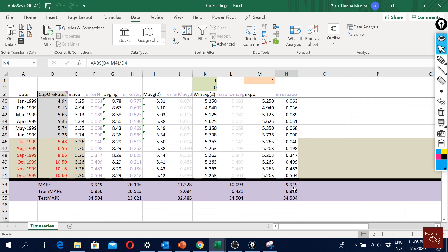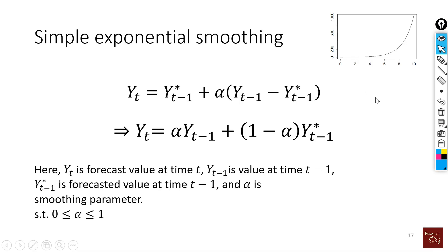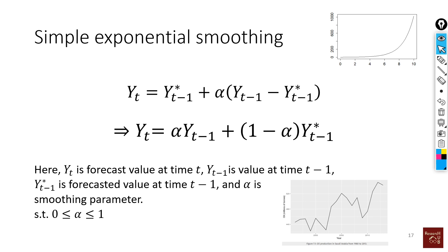So far, naive forecast performs best for this data. Simple exponential smoothing should be used when there's no clear trend or pattern in the data — no increasing/decreasing trend and no seasonality effects. When we don't have those components, simple exponential smoothing is appropriate. In the next video, we'll move on to Holt's trend method, which incorporates trend into the forecasting equations.